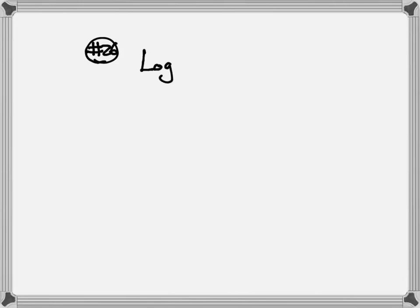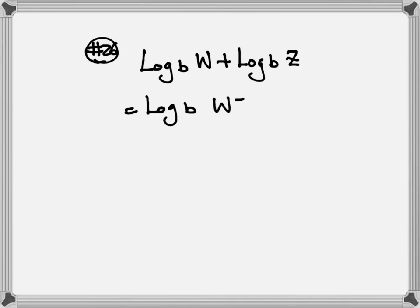Next, let's look at number 26. We have log base b of w plus log base b of z. Here, they give us addition, so we can change it back to multiplication. All you need to do is write log base b, then multiply w and z together. That's your answer.